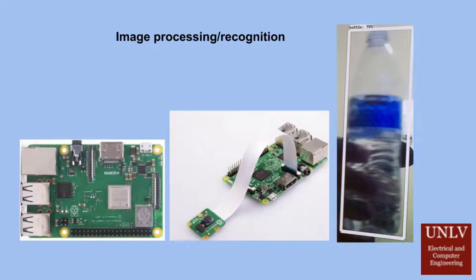The second identification method is an image processing unit. The hardware chosen for this is a Raspberry Pi 3B Plus with a Pi Camera V2. The open-source machine learning software library, TensorFlow, is used to train the Raspberry Pi to recognize commonly dispersed items.